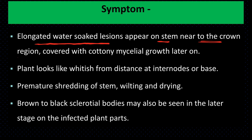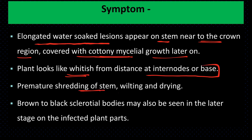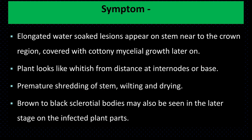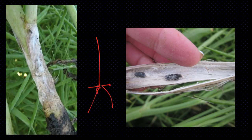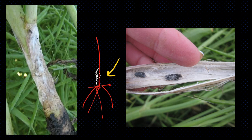The lesions are covered with cottony mycelium growth; later on, the plant looks whitish from a distance. At internode or base regions, premature shredding of the stems, wilting and drying occur. Brown to black sclerotia bodies may be seen in the infected plant parts. जैसे कि यह plant है, इसके symptoms base region से start होते हैं — पहले water-soaked lesions बनते हैं, उसके बाद white color के mycelium दिखाई देते हैं। यह white mycelium ऊपर की तरफ बढ़ते हैं, stem कमजोर हो जाता है, और बाद में black sclerotia बनते हैं। Infection lips और flowers में भी होता है।